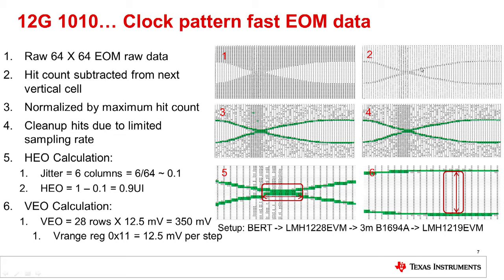At eye crossings, there are four or five bands where we have some numbers. This is simply due to the sampling limitation of the incoming waveform. For the next step, we calculate maximum hits from the 64 by 64 cells of waveform 2 and use this maximum hit count to normalize the whole 64 by 64 cells, creating waveform 3 — which is also color coded based on the normalized values. Waveform 4 is the same as waveform 3, but with isolated hits cleaned up that are artifacts of under-sampling.